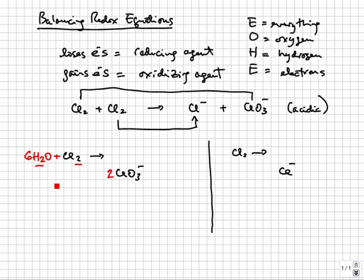Three: balance hydrogens using H+. There are 12 hydrogens on the left but none on the right. We add 12 H+ to the right. Four: finally balance charge by using electrons. The total charge on the left is zero. On the right, two chlorates is minus two and 12 H+ is plus 12, so the total charge on the right is plus 10. To balance the charge, we add 10 electrons to the right. This half-reaction is now balanced.